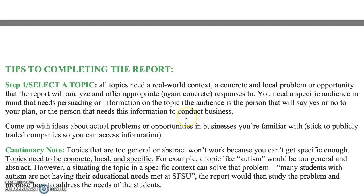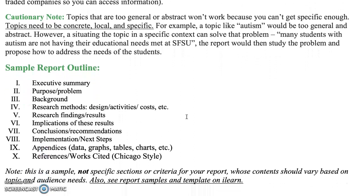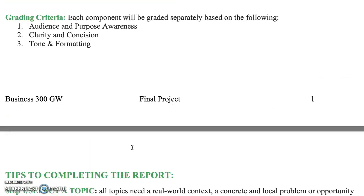The big thing is you need to select a topic. I'm going to go over just your report sample. You'd want to have an executive summary, purpose and problem background on that issue, resource methods — like how did you look into it, what did you find out, what are the implications, what are your solutions, and then your final recommendations, next steps, any graphs or tables, and ending with your references. Those are the big parts of the report.